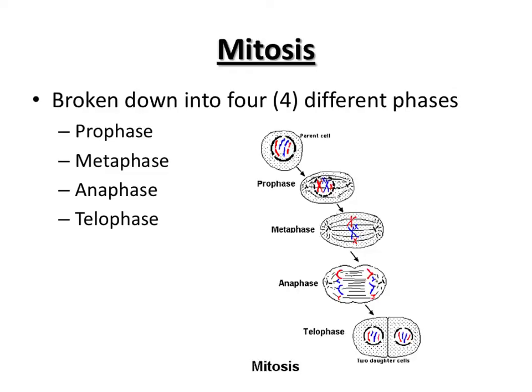Mitosis itself is broken down into four different phases you might recall from a previous class: prophase, metaphase, anaphase, and telophase. The way to remember these is PMAP — that's the order of these stages. You're expected to know that order and what actually happens in each of these stages.